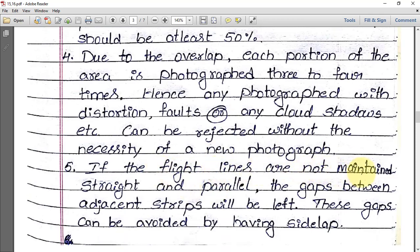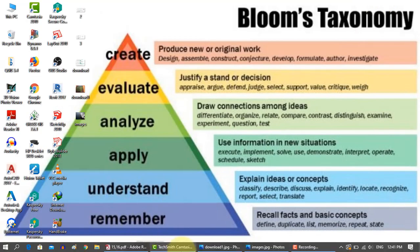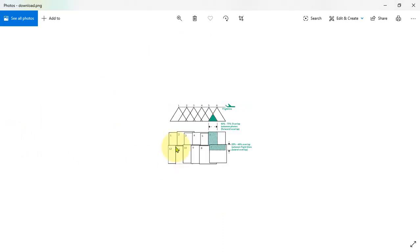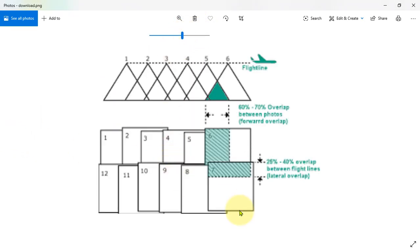The last point is that if flight lines are not maintained straight and parallel, gaps between adjacent strips will be left. These gaps can be avoided by having side lap. In overlap, another type of overlap is called side lap. You can see in this image...